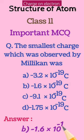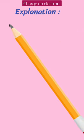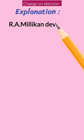Option B — minus 1.6 into 10 to the power minus 19 coulomb. Ab explanation dekhte hain.